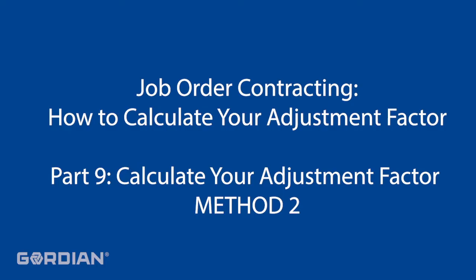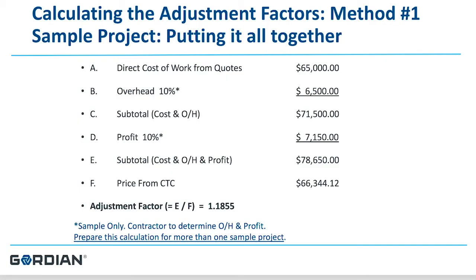Another direct way to calculate your factor is to calculate how much general condition expense you will have for the first year of the contract. In the solicitation, the owner will typically tell you the approximate yearly value — how much work they will order from you each year. In this example, the owner is going to offer $3 million worth of work over the first year. How much does it cost you to manage $3 million worth of work?